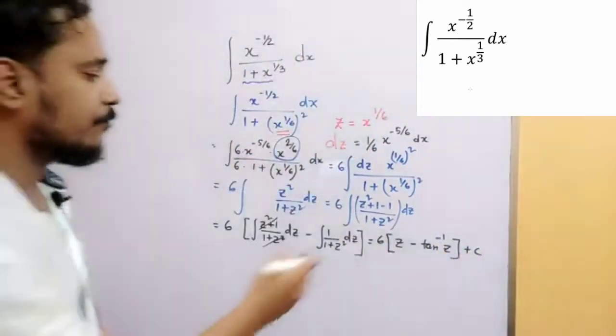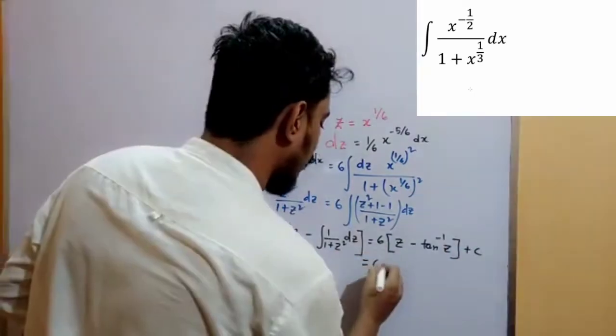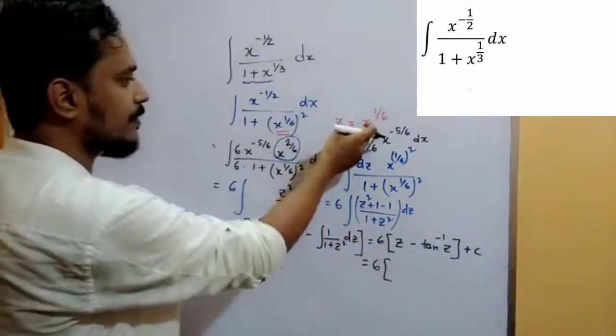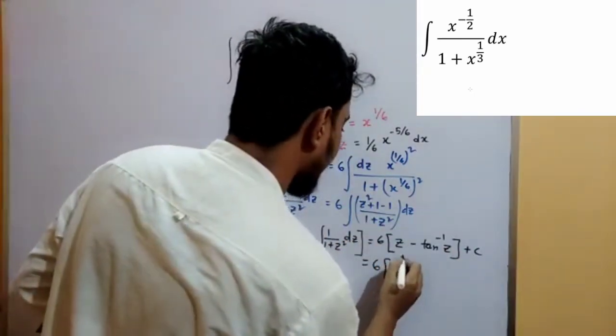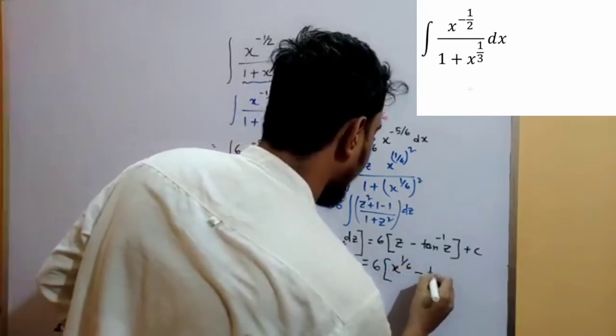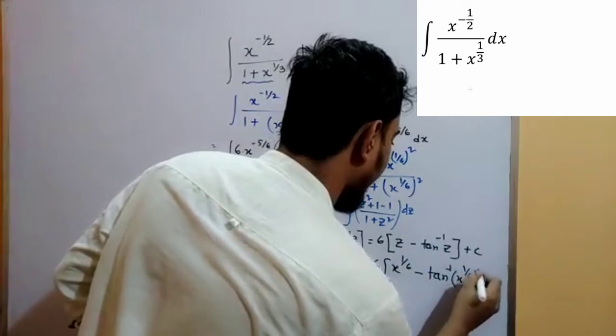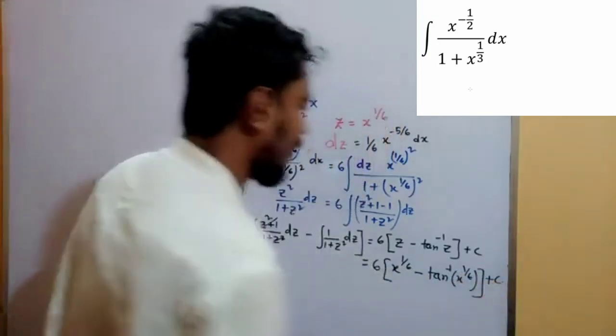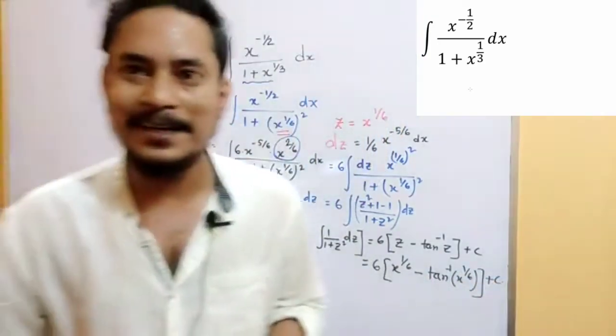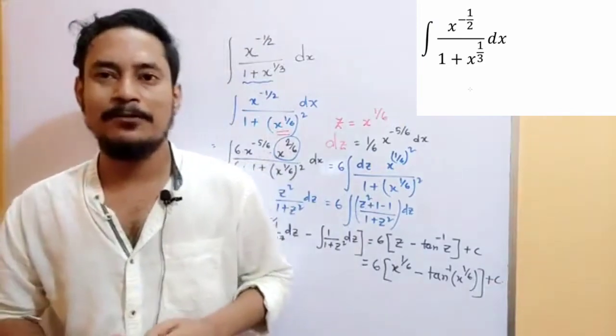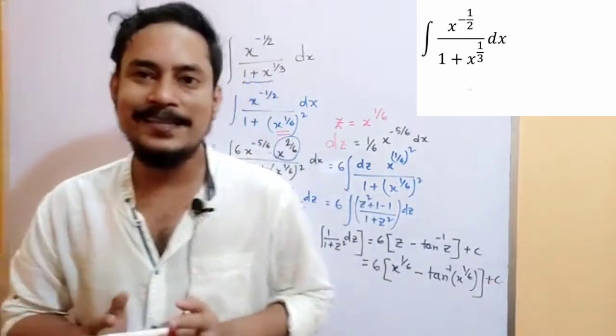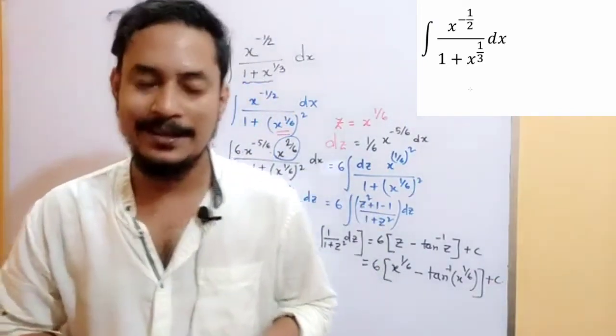Now substitute the z. So what is z? We are assuming z equals to x to the power 1 by 6. So this is the correct answer of this question. Please share this video with your friends thanks for watching see you guys.